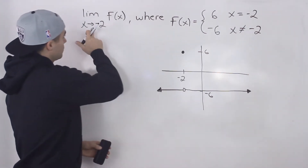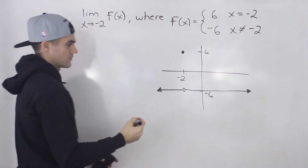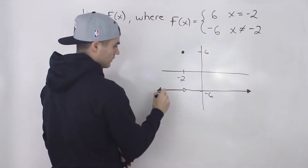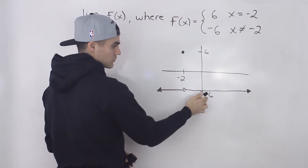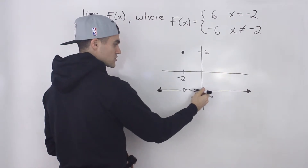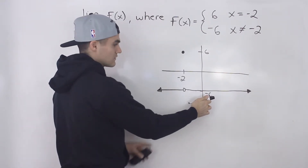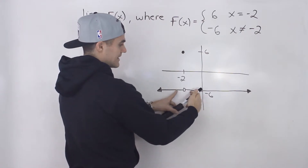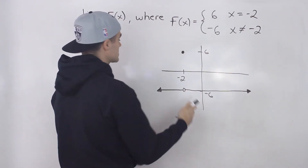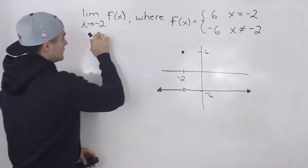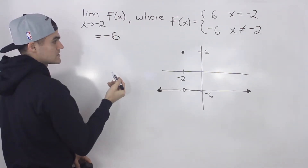So what's the limit of this function as x approaches negative 2? As we're approaching negative 2 from the left side, the y value is approaching negative 6. And as we approach it from the right side, it's also approaching negative 6. Because that limit is approaching that same y value from both sides, the limit of this function is going to be negative 6.